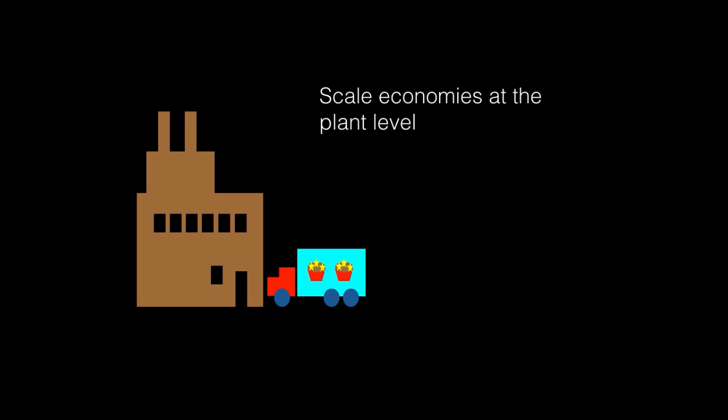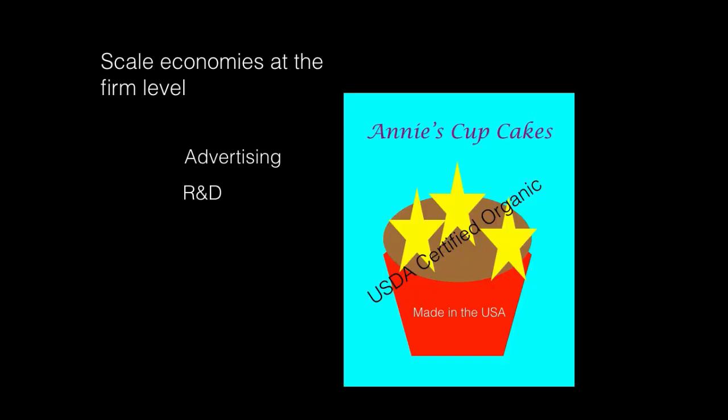Multiple machines operating in a plant can share costs like the cost of transporting inputs or the final product. Economies of scale can also be generated at the firm level. Expenses on things like advertising, research and development, and financing can benefit multiple plants within a firm, leading to lower per unit costs as output is increased in a given period.